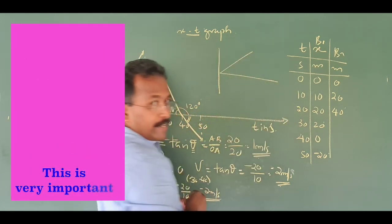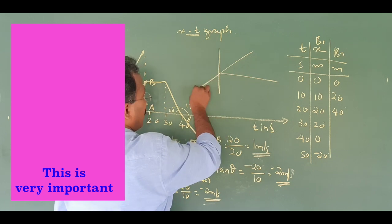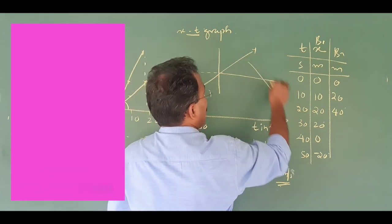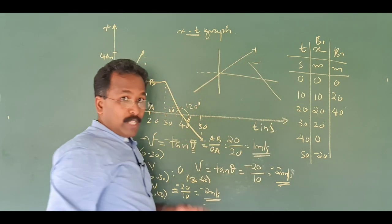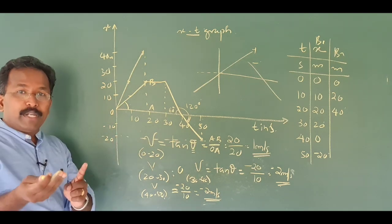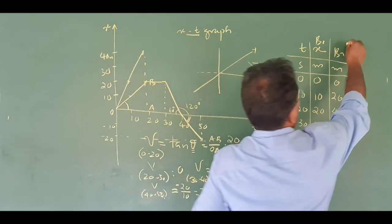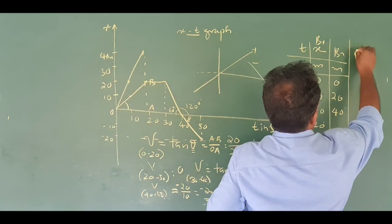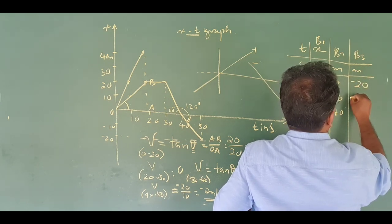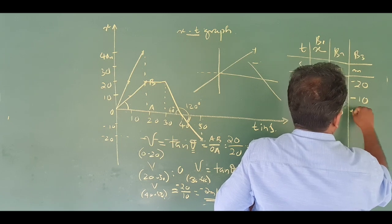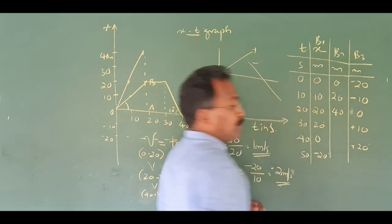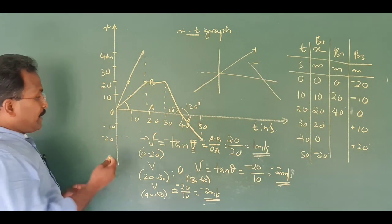One graph has a positive slope here, and another graph has a negative slope here. This graph is a positive slope, and this one is a negative slope. Now, let me show you a position-time graph where the position axis includes negative values: minus 20, minus 10, 0, plus 10, plus 20 meters.